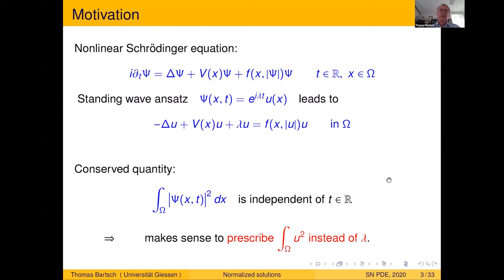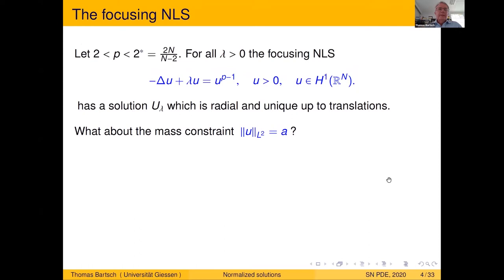To get some idea, we look at the very classical focusing nonlinear Schrödinger equation, where the nonlinearity is u^{p-1} with P subcritical: bigger than 2 but less than the Sobolev critical exponent. Looking for positive solutions, it is well known that this equation has a unique positive radial solution, unique up to translations, with maximum at zero. Solutions can be obtained by the mountain pass theorem — very classical.